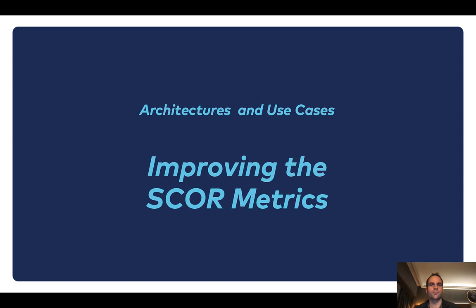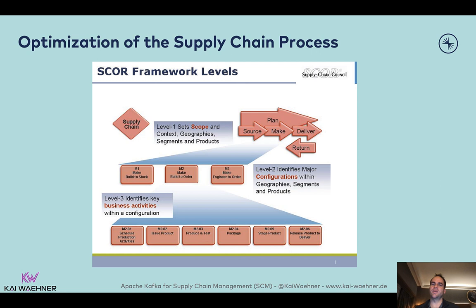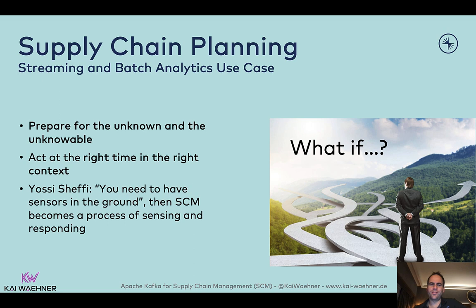Another key use case is improving the SCOR matrix. We've seen the SCOR model — it's about all the processes and steps for supply chain planning, sourcing, making, delivering, and returning end-to-end. Here's just one example where you step down from a higher-level scope into a deeper scope like 'make to order,' and then under that you have different steps and business activities like issue product, produce and test, package, stage product, and so on. This is the process framework you typically work with, and let's take a look at two examples where Kafka can help a lot.